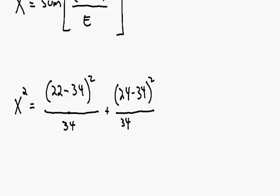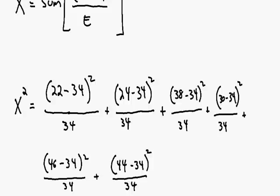Doing the same for the remaining four outcomes — I had to use two lines to write everything down. Plugging everything into our calculator, we get a chi-square value of 15.29. This is our test statistic.